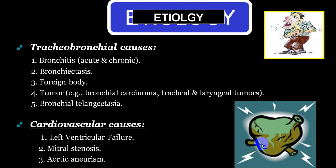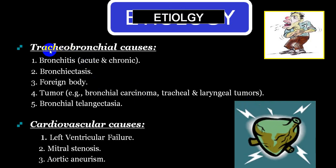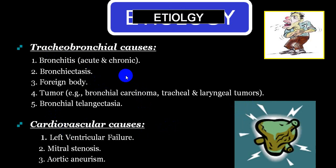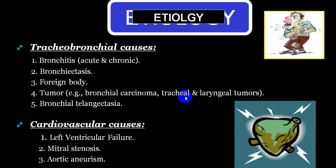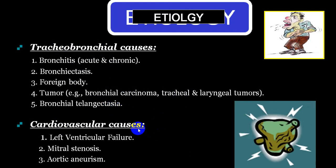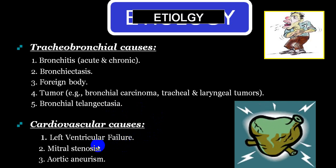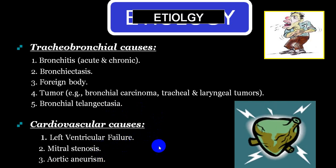As far as the etiology of haemoptysis is concerned, you can divide it by site. The two most common categories are tracheobronchial and cardiovascular. Tracheobronchial causes include acute bronchitis, chronic bronchitis, bronchiectasis, foreign body, bronchogenic carcinoma, laryngeal carcinoma, and telangiectasia. Cardiovascular causes include left ventricular failure, acute pulmonary edema, mitral stenosis, and aortic aneurysm causing compression of the trachea.